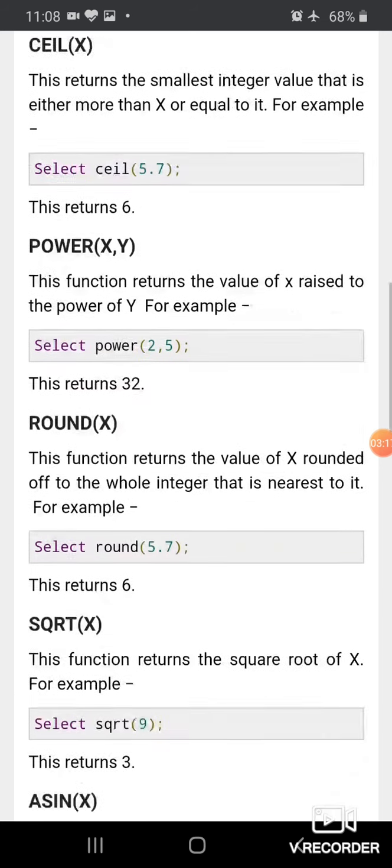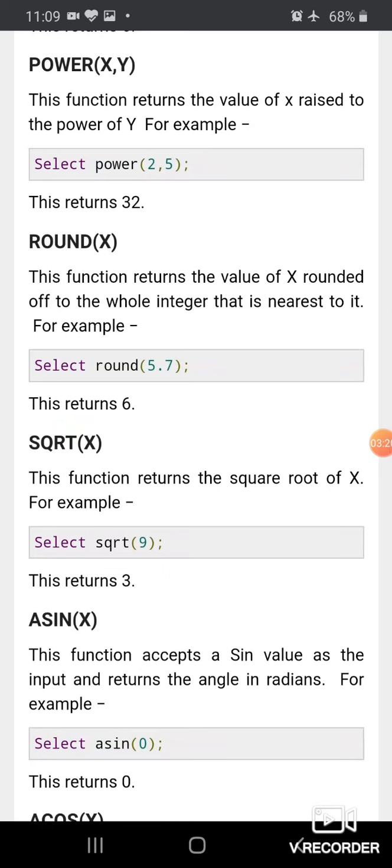SQRT(X) - this function returns the square root of X. For example, SQRT - the integer is written in the parenthesis and the answer will be the square root of the number. For example, square root of 9 is 3.